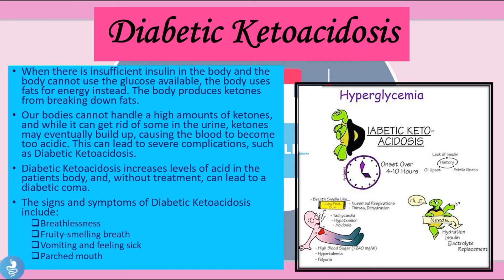When there is insufficient insulin in the body and the body cannot use the glucose available, the body uses fats for energy instead and produces ketones from the breaking down of fats. Our bodies cannot handle high amounts of ketones, and while it can get rid of some in the urine, ketones may eventually build up causing the blood to become too acidic — this is called diabetic ketoacidosis. Without treatment this can actually lead to a diabetic coma.